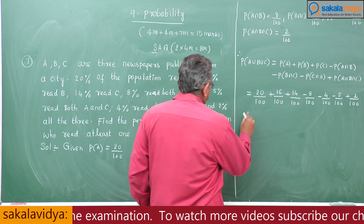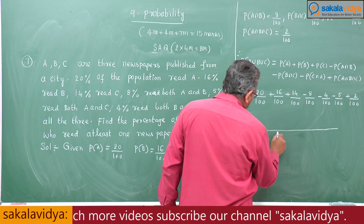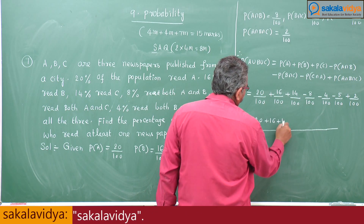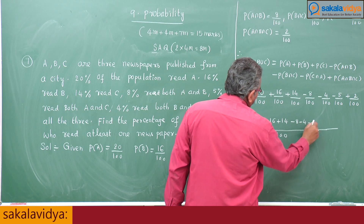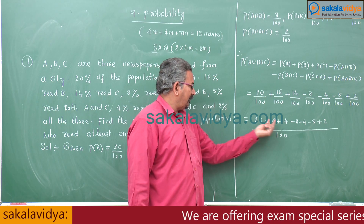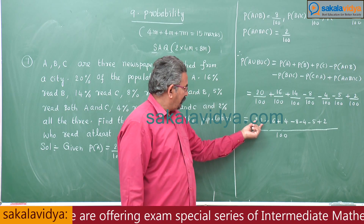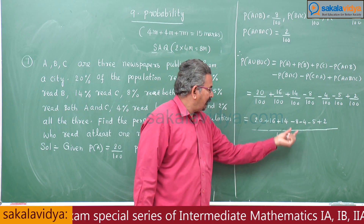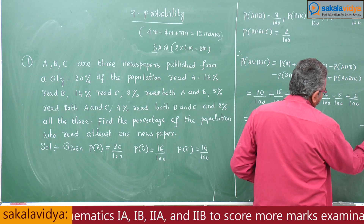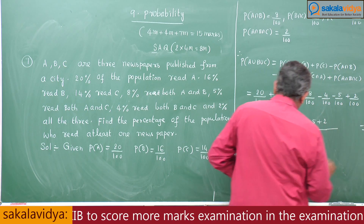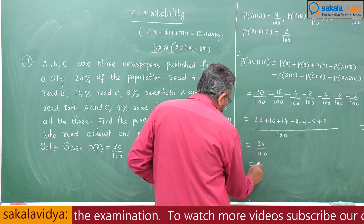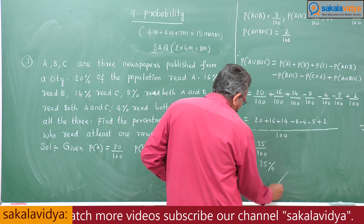This equals (1/100) × (20 + 16 + 14 − 8 − 4 − 5 + 2). That is 50 + 2 = 52, minus 17, giving 35. So the answer is 35/100, meaning 35% of the population read at least one newspaper.